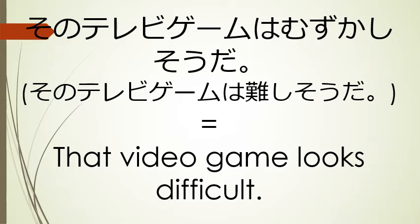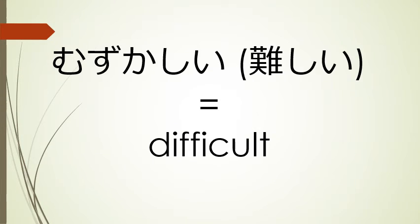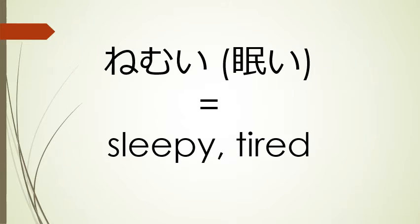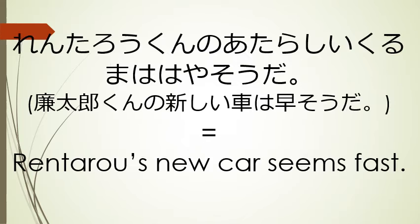So if I were to say 'Sono terebi geemu wa muzukashisou da,' that would mean 'that video game looks difficult.' The adjective 'muzukashisou' means 'seems or looks difficult.' If I said 'Aka-chan wa nemusou desu,' that would mean 'the baby looks sleepy.' 'Nemui' means sleepy or tired, so 'nemusou' means 'looks sleepy' or 'seems tired.' And if I said 'Rentaro-kun no atarashii kuruma wa hayasou da,' that would mean 'Rentaro's new car seems fast.'